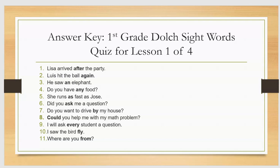Here is the answer key. Number 1: Lisa arrived after the party. Number 2: Lewis hit the ball again. Number 3: He saw an elephant. Number 4: Do you have any food? Number 5: She runs as fast as Jose.